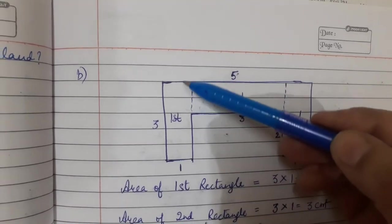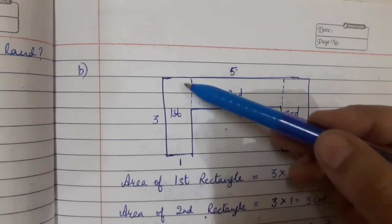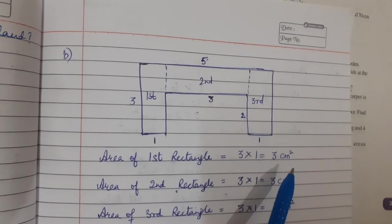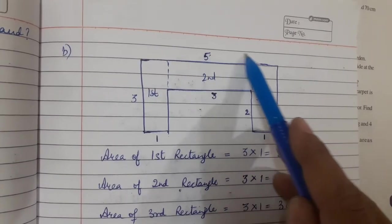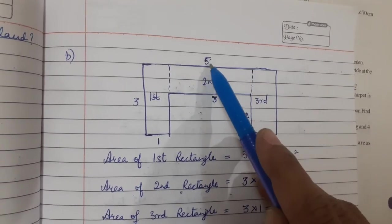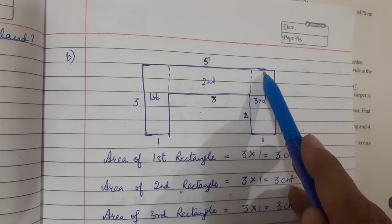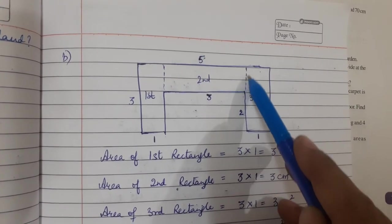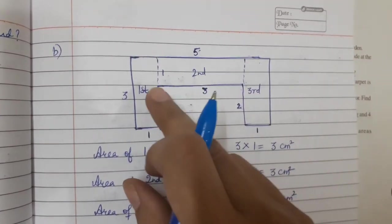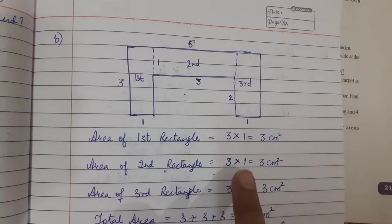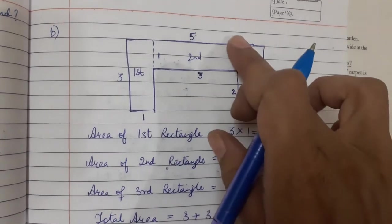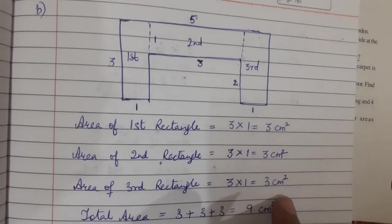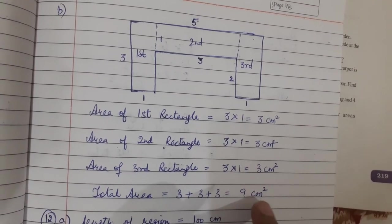Now for the second figure: by extending and making rectangle shapes, we get 3 rectangles. Area of first rectangle is 3 × 1 = 3 cm square. For the second rectangle, the total length is 5 but minus 1 and minus 1 leaves 3, so this side is 3 and the width is 1. Area of second rectangle is 3 × 1 = 3 cm square. This is the third rectangle — again 3 × 1 = 3 cm square. Total area is 3 + 3 + 3 = 9 cm square.